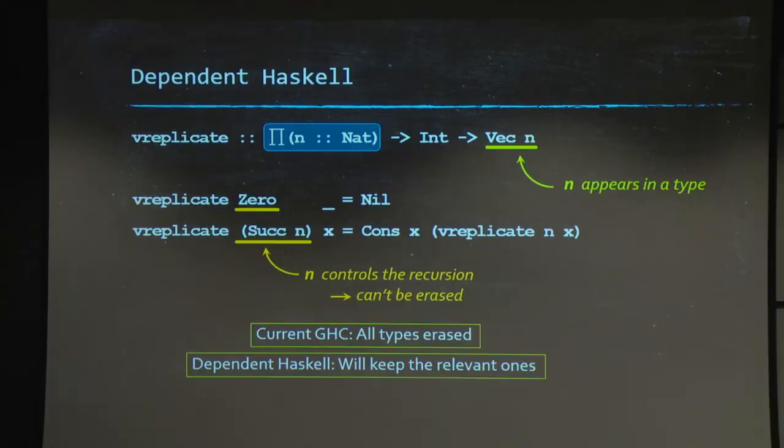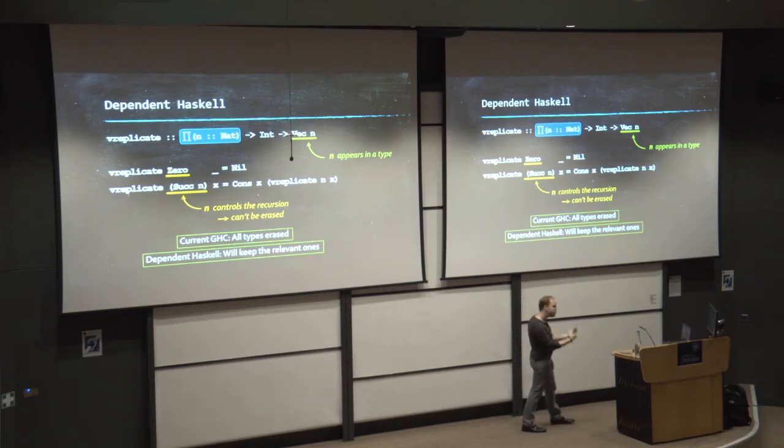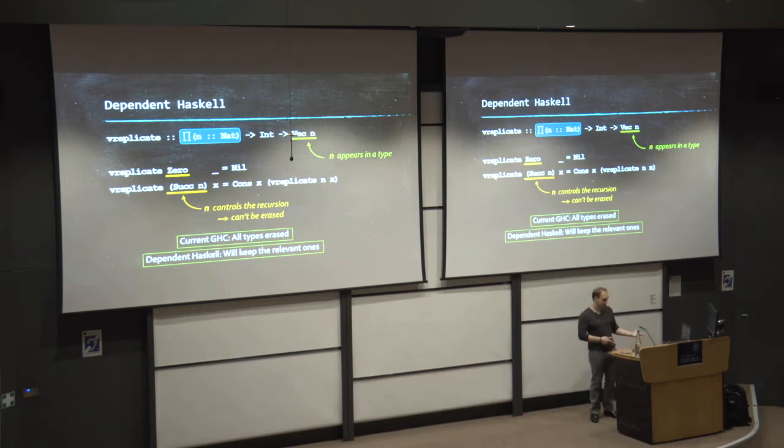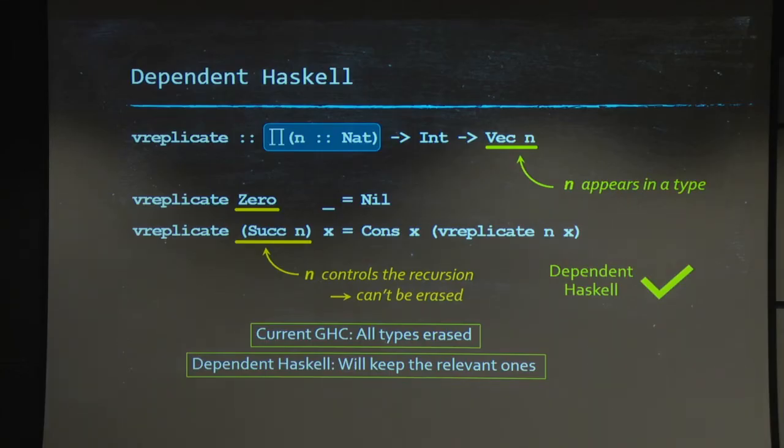So, in dependent Haskell on the other hand, we don't force you to get rid of all the types. You can keep the ones you need to keep. You can compute some types too. This is why, of course, we can actually type check this code in dependent Haskell.